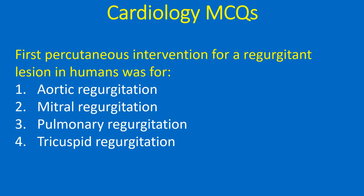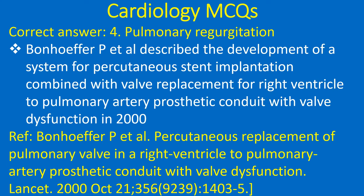First percutaneous intervention for a regurgitation lesion in humans was for: 1. aortic regurgitation, 2. mitral regurgitation, 3. pulmonary regurgitation, 4. tricuspid regurgitation. Correct answer: 4. pulmonary regurgitation. Bonhoeffer and colleagues described the development of a system for percutaneous stent implantation combined with valve replacement for right ventricle to pulmonary artery prosthetic conduit with valve dysfunction in 2000.